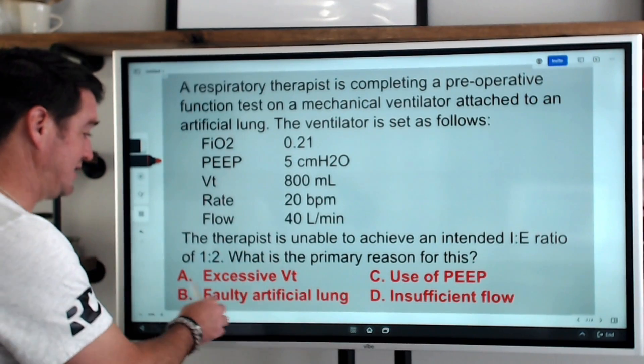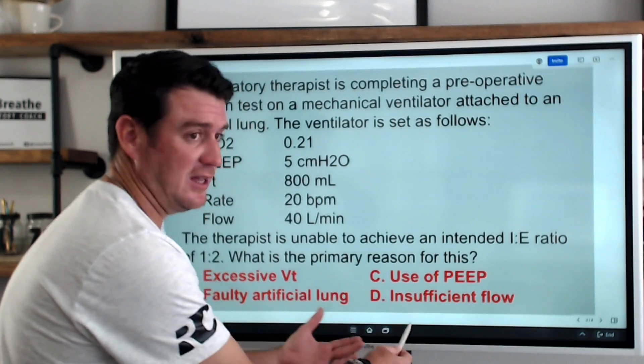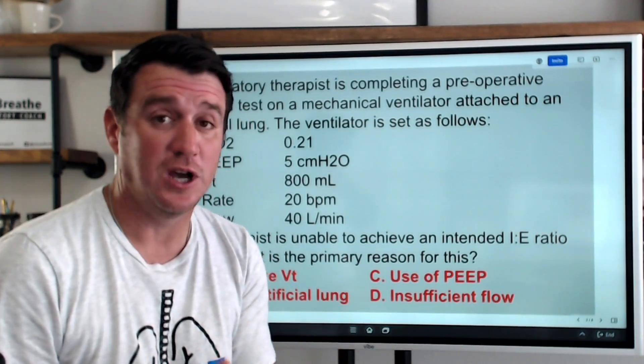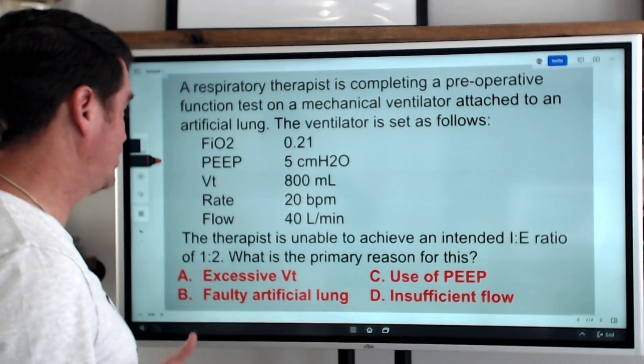The therapist is unable to achieve an intended I to E ratio of one to two. What is the primary reason for this? Then we have our answers: excessive tidal volume, faulty artificial lung, use of PEEP, insufficient flow. Now you get to pause this right now and choose what you think is the best answer to this question.